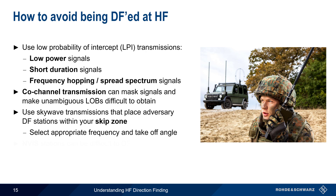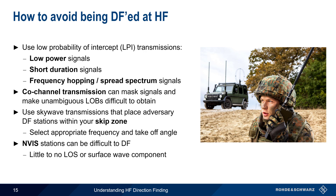Finally, NVIS transmissions are more difficult to DF than standard low elevation angle skywave signals. NVIS signals are transmitted and received almost vertically, so very little energy can be received via line of sight or via ground wave. The high elevation angles used in NVIS are also difficult for many DF systems to accurately measure.